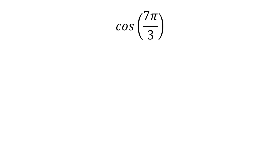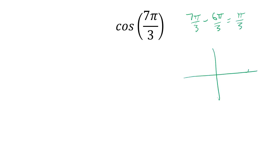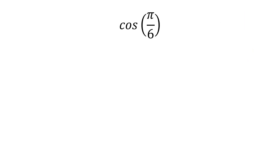What is the cosine of 7π/3? It's outside my comfort zone, but only by π/3. Subtracting 2π (6π/3) leaves π/3 — a 60-degree reference angle in quadrant 1. The coordinates are (1/2, √3/2), and cosine is the x-value, so the answer is 1/2.